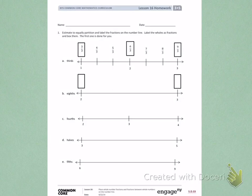When I look at B, I need to partition into eighths. I notice that my number line is starting at 2 and 3. So to begin, I'm going to start by partitioning in half. Then I will partition my halves in half, creating fourths.